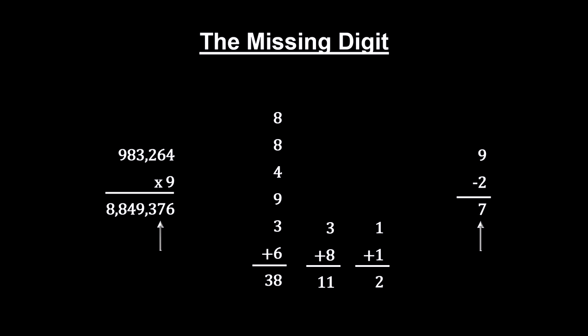Subtract that digit from 9, and you get the number you picked out of the original product. This will work no matter which digit you choose to remove from the product.